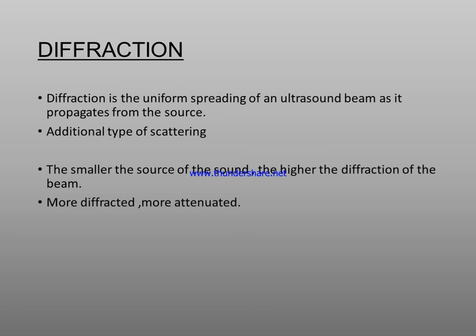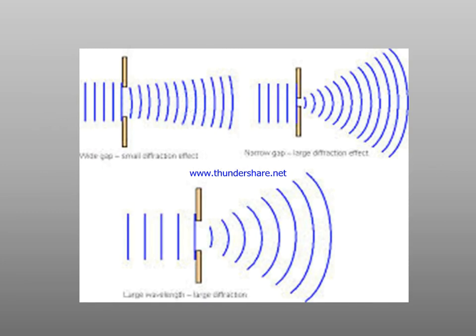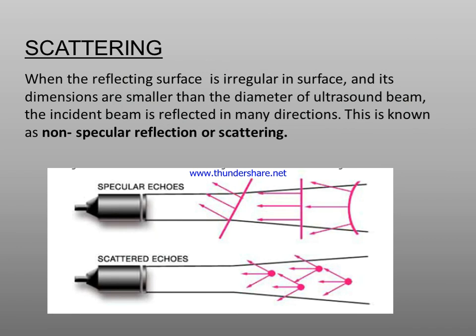In the case of diffraction, diffraction is the uniform spreading of an ultrasound beam as it propagates from the source — it is an additional type of scattering. The smaller the source of sound, the higher the diffraction of the beam. More diffracted means more attenuated. In the case of scattering, when the reflecting surface is irregular and its dimensions are smaller than the diameter of the ultrasound beam, the incident beam is reflected in any direction — this is called non-specular reflection or scattering.